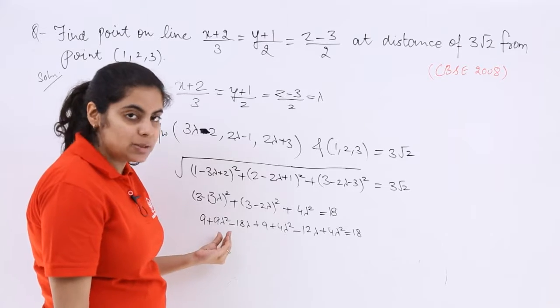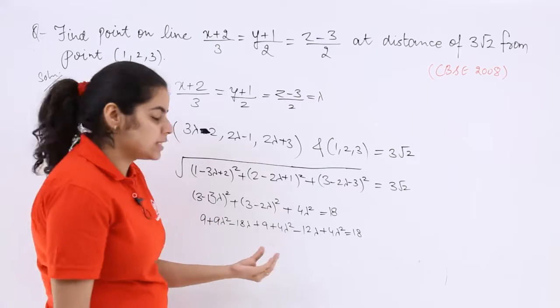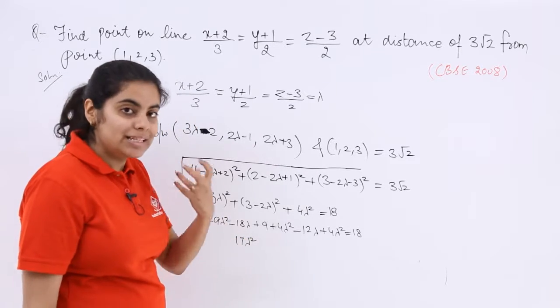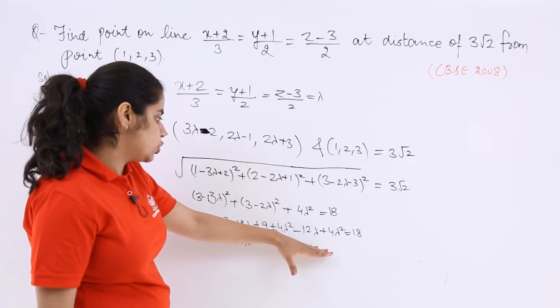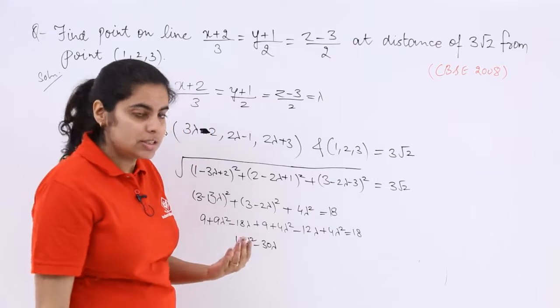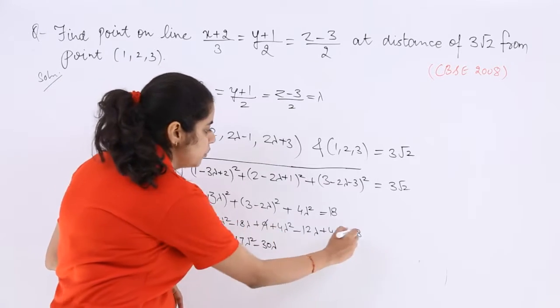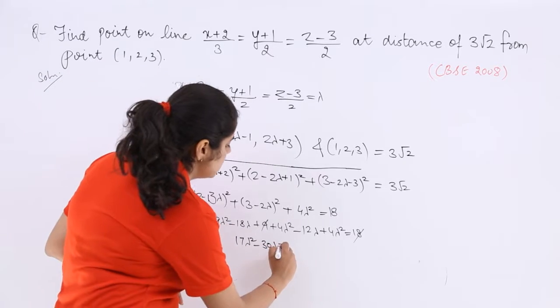Now wherever you have lambda square, let's put them together, 9 plus 4 plus 4, so 4 plus 4 is 8, 8 plus 9 is 17 lambda square. Then wherever it is lambda, let's put them together, minus 18 lambda minus 12 lambda is minus 30 lambda. Wherever the constants, let's put them together, 9 and 9 is 18, getting cancelled with 18 first of all. Any other constants into picture? No. So this is equal to 0.